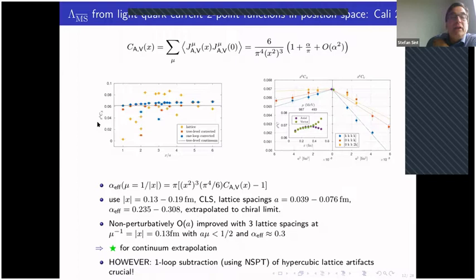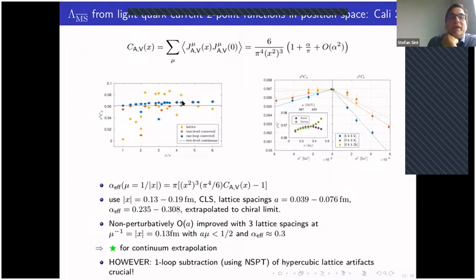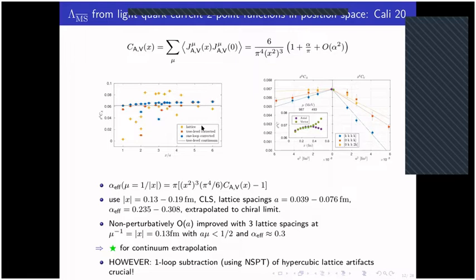Carly et al. use distances between 0.13 and 0.19 fm, a CLS set of lattice configurations with lattice spacings between 0.039 and 0.076 fm, and effective alphas varying between 0.235 and 0.31 after extrapolation to the chiral limit. They have O(a)-improved action with three lattice spacings, satisfying the green star for continuum extrapolation. They correct for tree-level and one-loop lattice artifacts using stochastic perturbation theory, observing that vector and axial vector current correlators agree in the continuum limit — as expected since any difference signals chiral symmetry breaking, a purely non-perturbative effect.